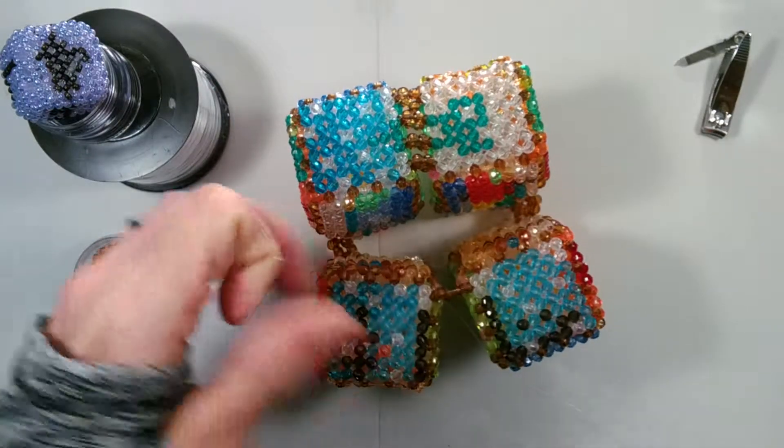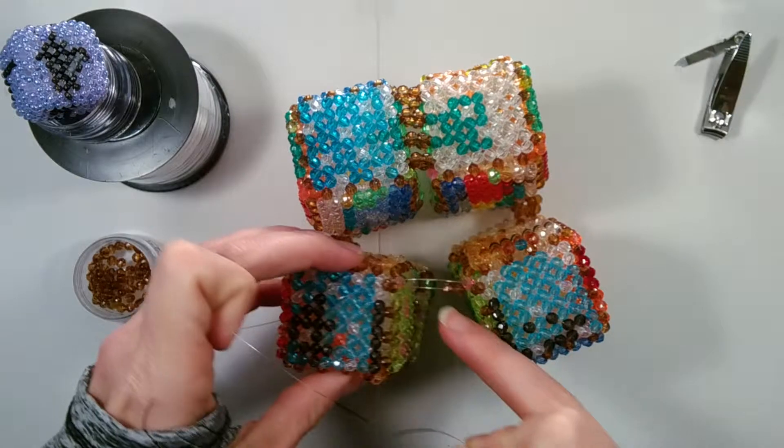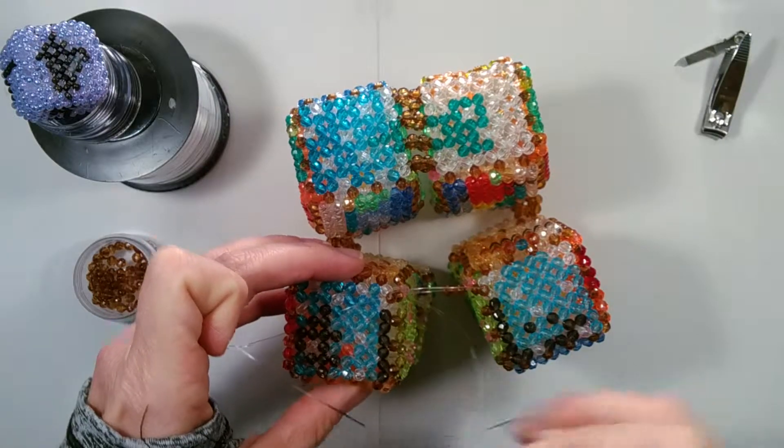There we have our first section. Now we want to go through the two side beads on each here.